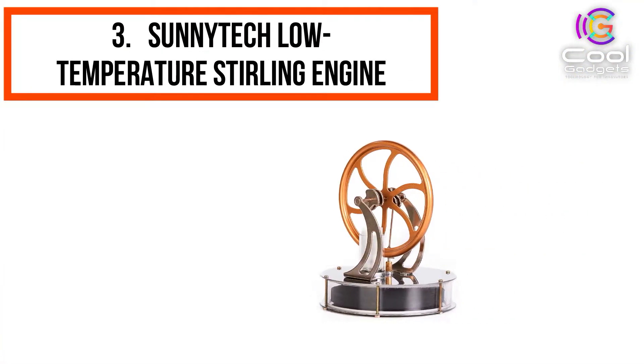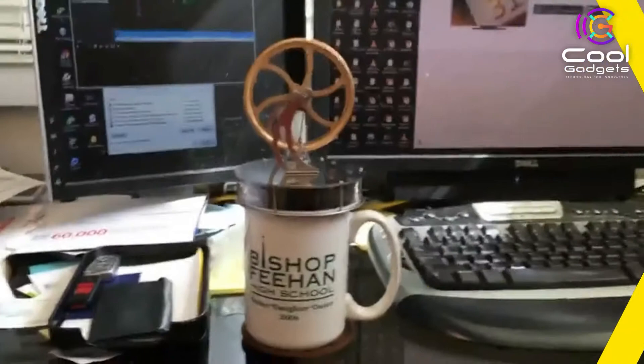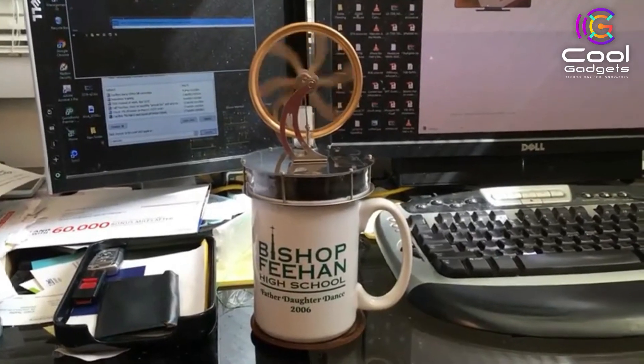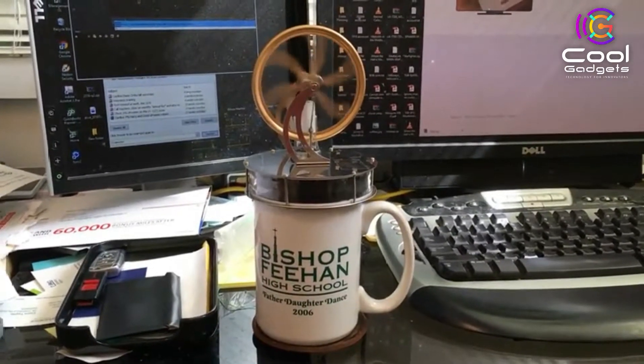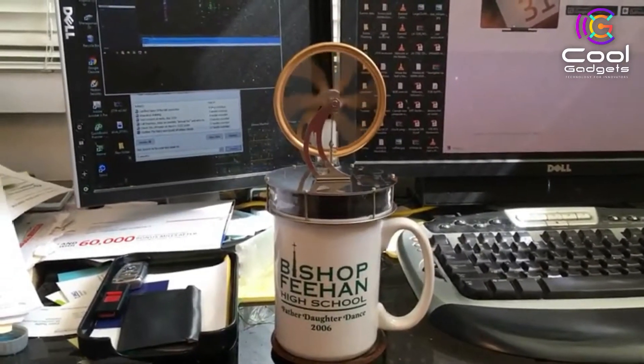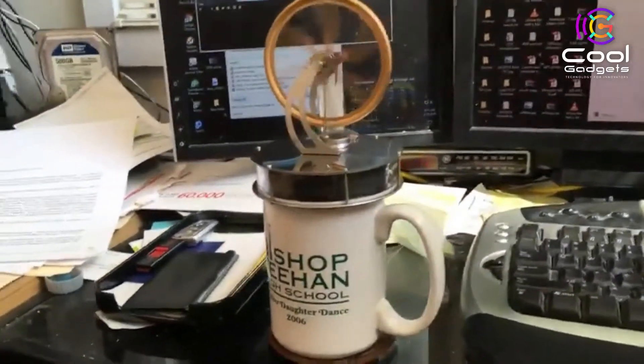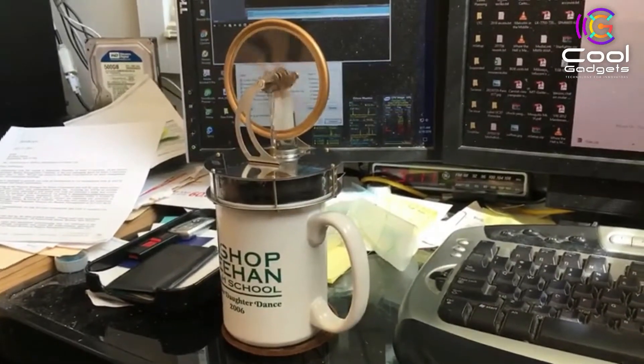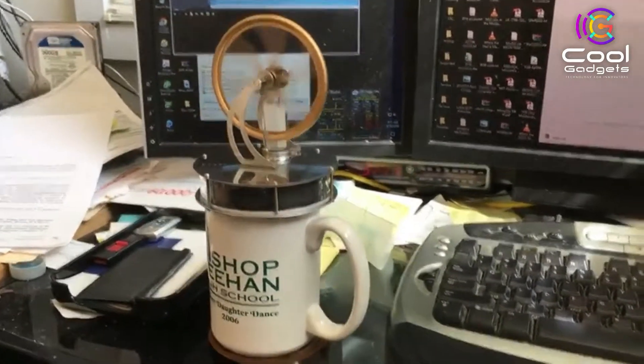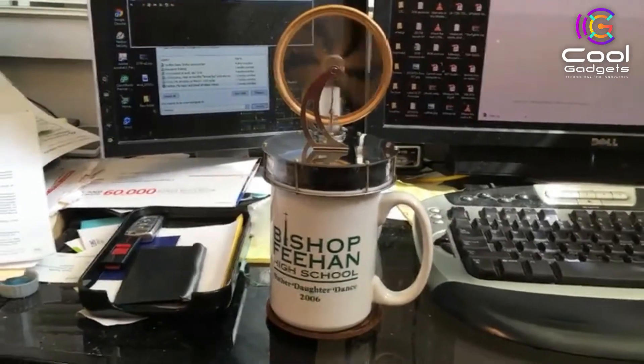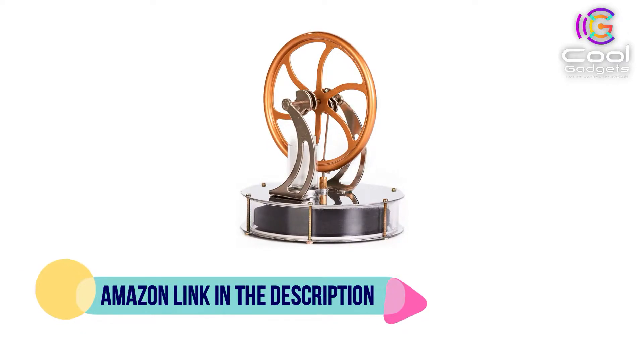Number 3: Sunnytech Low-Temperature Stirling Engine. Did you know you can power a motor by exploiting temperature differences? You can with a Stirling engine. The Sunnytech Stirling engine is a fun, hands-on way to teach students and kids about energy. Made of rust-free parts, this perpetual motion engine is designed to run for many years. Place the device on top of a cup of steaming coffee and watch the engine chug into motion. To make it go even faster, put ice cubes on the Stirling upper plate. The larger the temperature differential, the stronger the force produced. If you like this product, please check out the Amazon link in the description below.